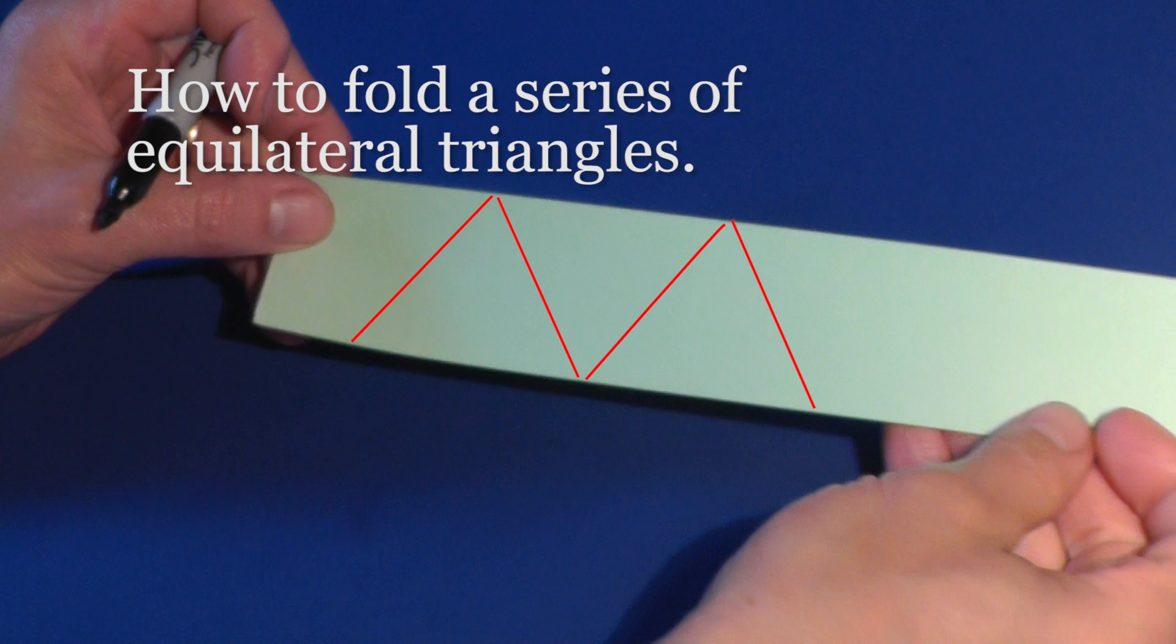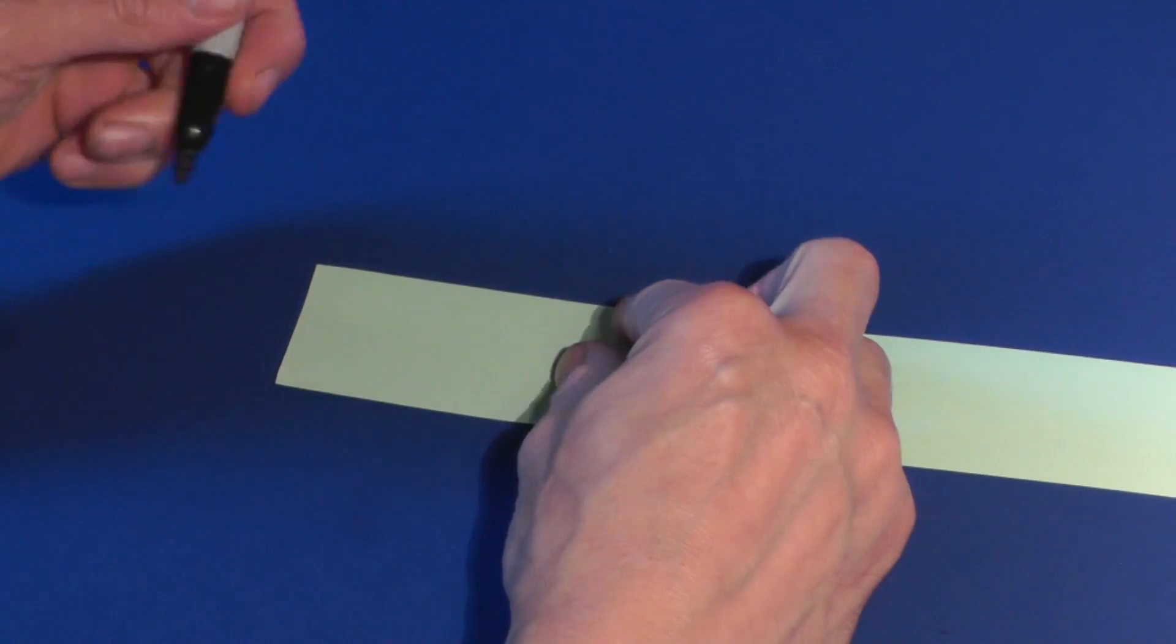I'll show you how to fold a series of equilateral triangles in a strip of paper. This comes in handy when making flexagons.